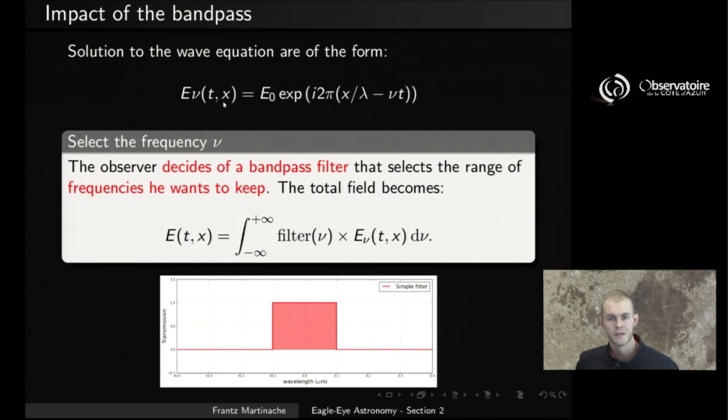And for now, let's imagine that we're going back to this ideal case where we have ideal solutions here. In addition to space and time, which appear here and here, you have to remember that this solution is also a function of the frequency of the light you're looking at. The observer, an astronomer at the telescope, is typically going to decide of a bandpass filter to use to perform his observation.